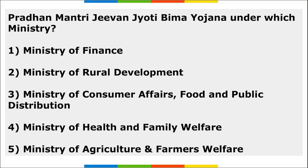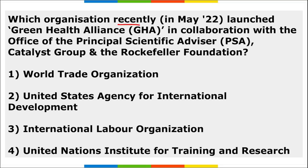Pradhan Mantri Jivan Jyoti Bima Yojana was launched under the Ministry of Finance. It is a one-year life insurance scheme, renewable annually, offering coverage for death due to any reason. Individuals aged 18 to 50 with a savings bank or post office account are eligible to enroll.